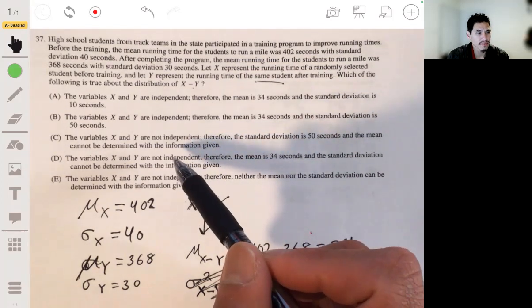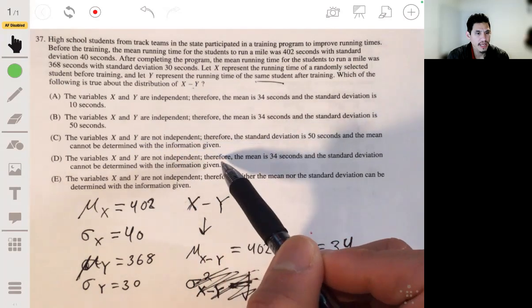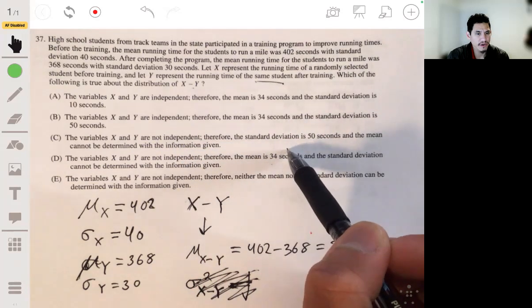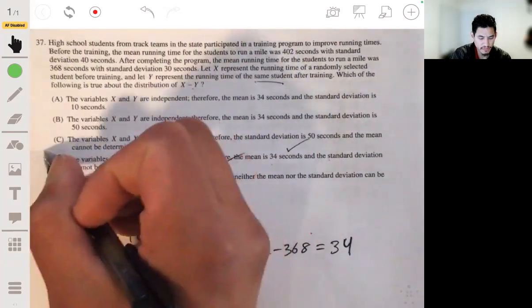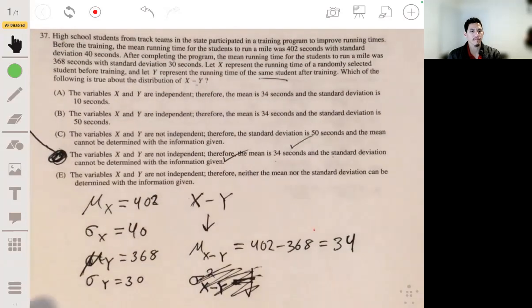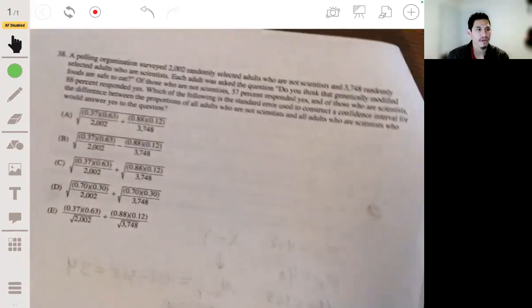So variables x and y are not independent, and the mean is okay, 34, but the standard deviation cannot be given with information, so it would be D. All right.